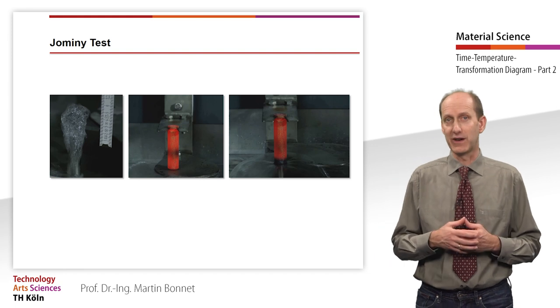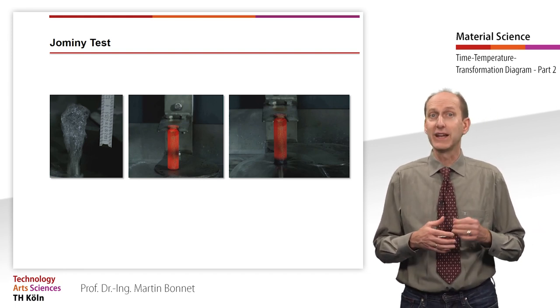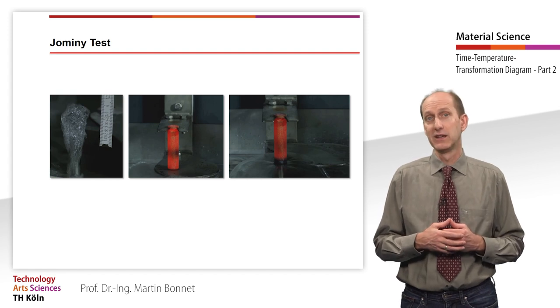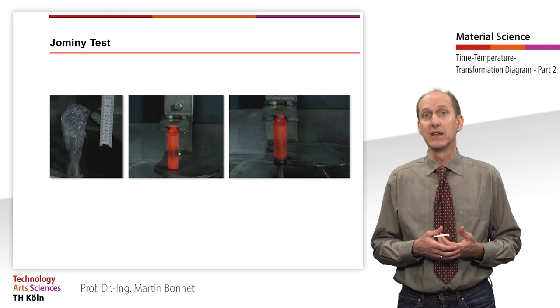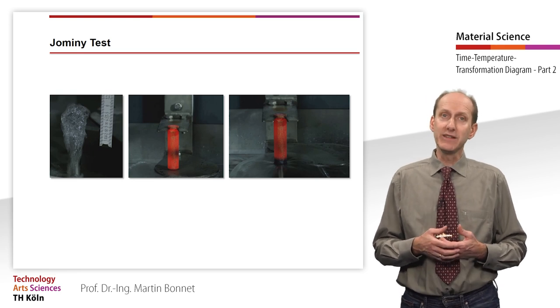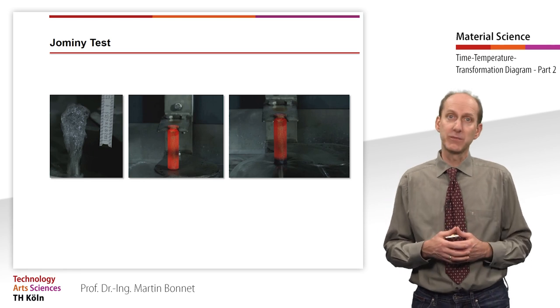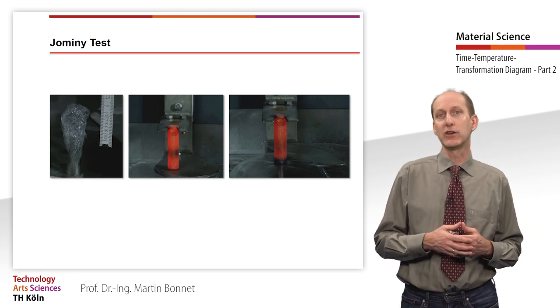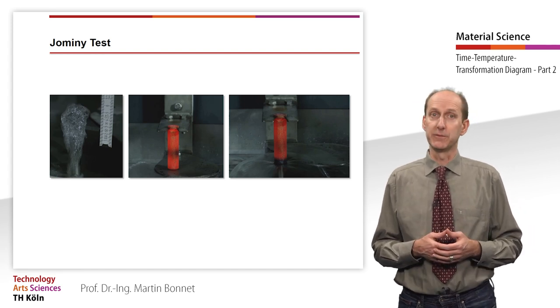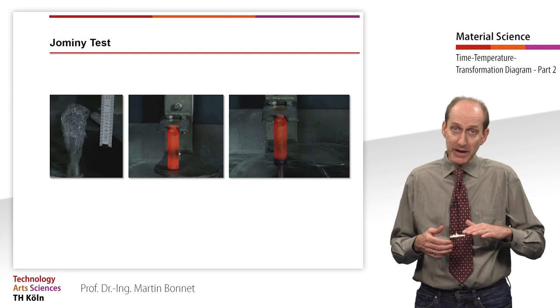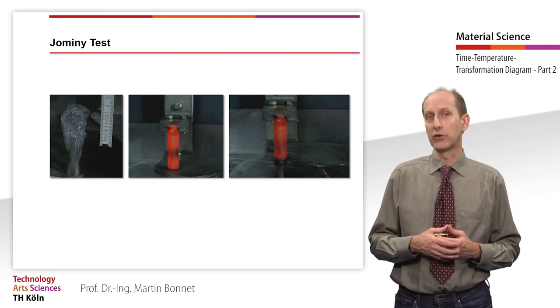A quenching device is used for the targeted cooling of the sample at the end phase. It consists of a holder in which the sample can be hung and allows it to be placed centrally by a water jet. The water jet must have a rising height of 65 mm and a diameter of 12.5 mm. A shutter makes it possible to deflect the water jet when the sample is inserted.